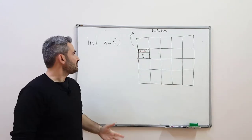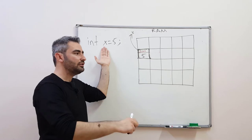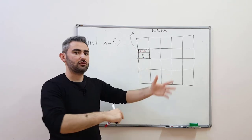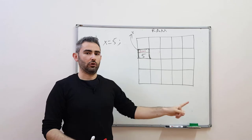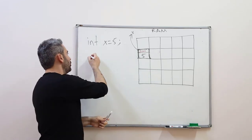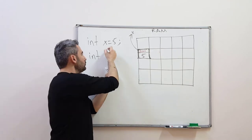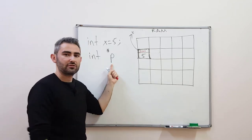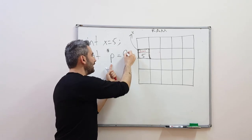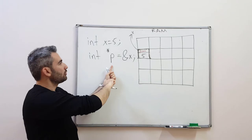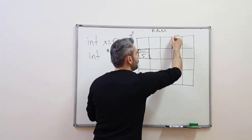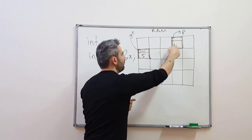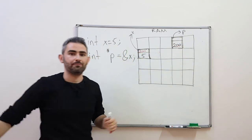This is where pointers come in. Pointers are variables just like this — the only difference is they hold the address of another location, not integers like 5 or 6, not characters. They only hold the address of another location. So if I want to define a pointer, let's say int *p — I only need to use this asterisk notation to specify that this variable will hold an address. The operating system will also allocate a space for p. Let's say this is our p, so the value inside p will be the address of x, which is 200. Now this is a pointer.